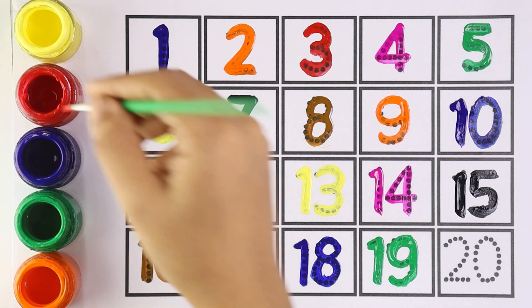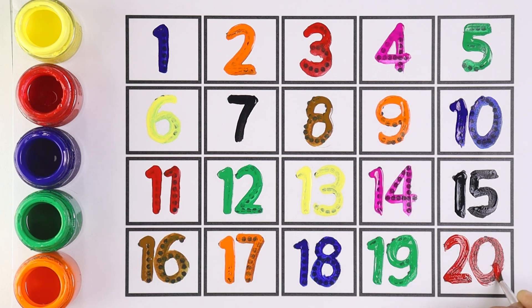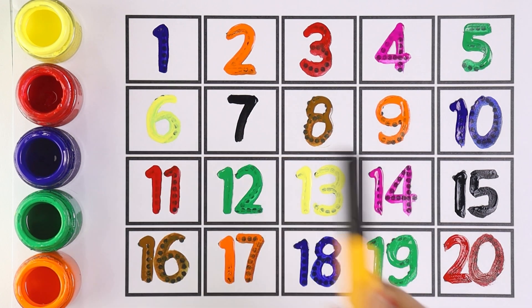Red color for number twenty. Two and zero makes the number twenty. Now let's count from one to twenty.